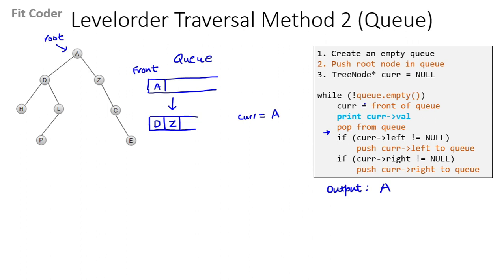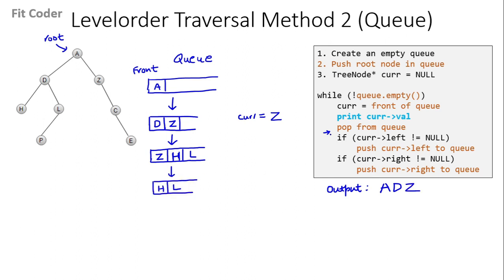In the next iteration, current becomes the front of the queue which is D. We print D, pop from the queue, then push left of D which is H, and push right of D which is L. In the next iteration, current becomes Z — we print Z, pop from the queue. Left of Z is null so that if condition is false; right of Z is C so we push C to the queue.